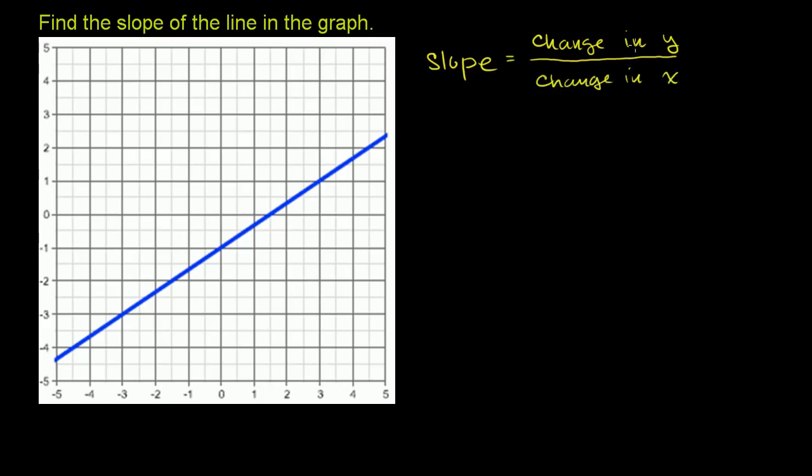And for a line, this will always be constant. And sometimes you might see it written like this. You might see this triangle. That's a capital delta. That means change in y over change in x. That's just a fancy way of saying change in y over change in x.